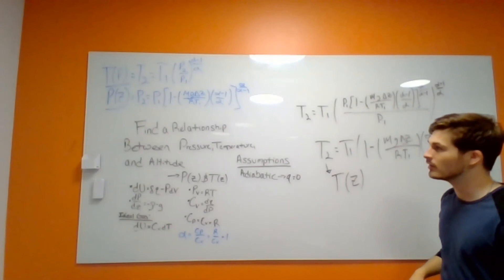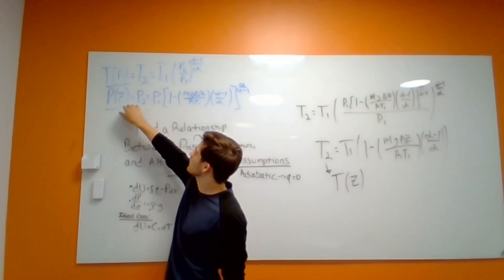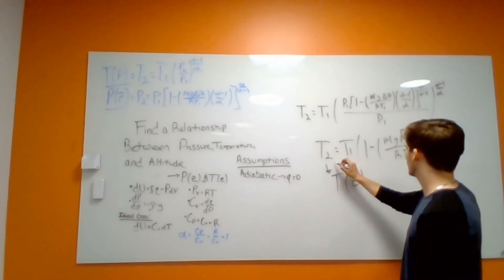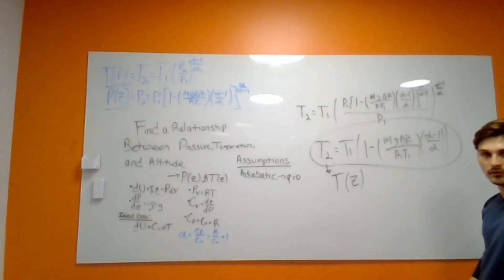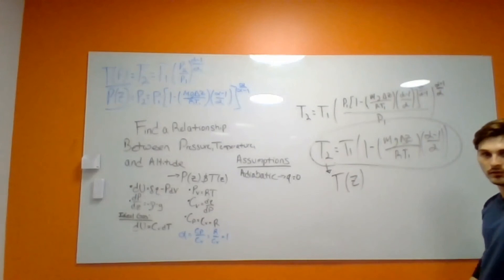So now we have found our equation for the relationship between temperature and altitude, the equation for pressure and altitude, and the equation for the relationship between temperature and pressure. Using these three equations, we can easily describe how temperature and pressure change through our atmosphere as you go up and down in altitude. Thank you for watching — we'll see you next time.